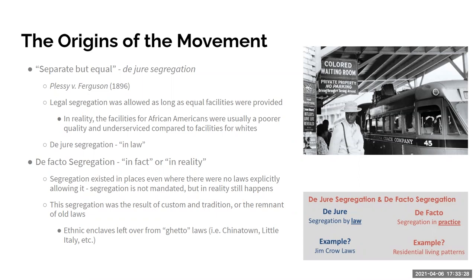These patterns are left over from what we call ghetto laws — laws that mandated certain immigrants live in certain regions. That's how we end up in big cities like Los Angeles, Chicago, or San Francisco with places called Chinatown or Little Italy. Those immigrants didn't necessarily choose to cluster there — there used to be laws mandating it. Now even though those laws are gone, people still live there because there are others who speak the same language or share the same customs.